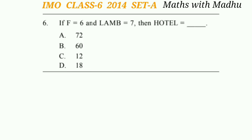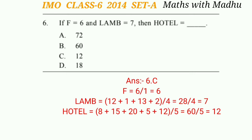Question 6: If F = 6 and LAMP = 7, then HOTEL = ? The rule is: sum the alphabetical positions of the letters and divide by the number of letters. F is the 6th letter, so 6 ÷ 1 = 6. For LAMP: 12 + 1 + 13 + 2 = 28, and 28 ÷ 4 = 7. For HOTEL: H + O + T + E + L = 60, and 60 ÷ 5 = 12. The correct answer is option C, 12.